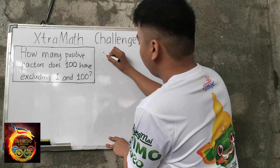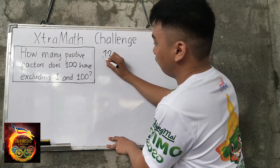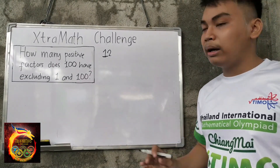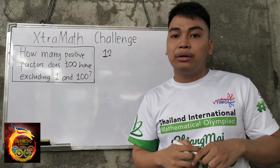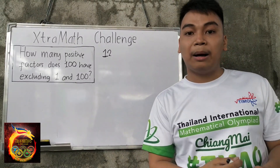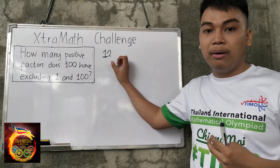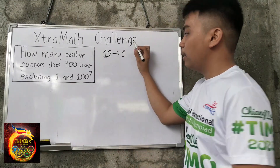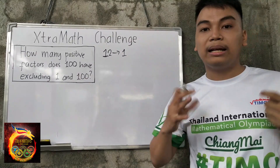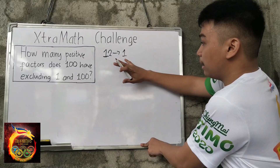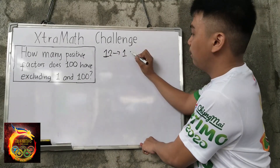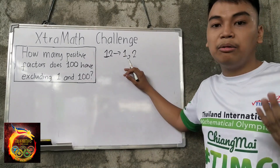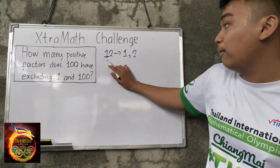Okay, so how do we get the positive factors of a number? Let's say, for example, the number is 12. How do we get the positive factors of 12? The positive factors are the numbers that when we divide into 12, we get no remainder. For example, 1: 12 divided by 1 is 12, and there's no remainder. So 1 is one of the positive factors of 12. Next is 2, because 12 divided by 2 is 6, and there's no remainder.